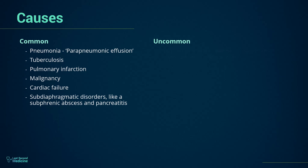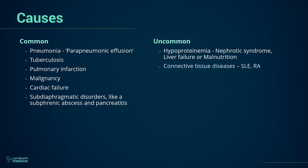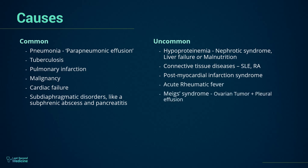Uncommon causes of pleural effusion include hypoproteinemia from nephrotic syndrome, liver failure or malnutrition, connective tissue diseases particularly systemic lupus erythematosus and rheumatoid arthritis, post-myocardial infarction syndrome, acute rheumatoid arthritis, Meigs syndrome (which is ovarian tumor plus pleural effusion), myxedema, uraemia, and asbestos-related benign pleural effusion.